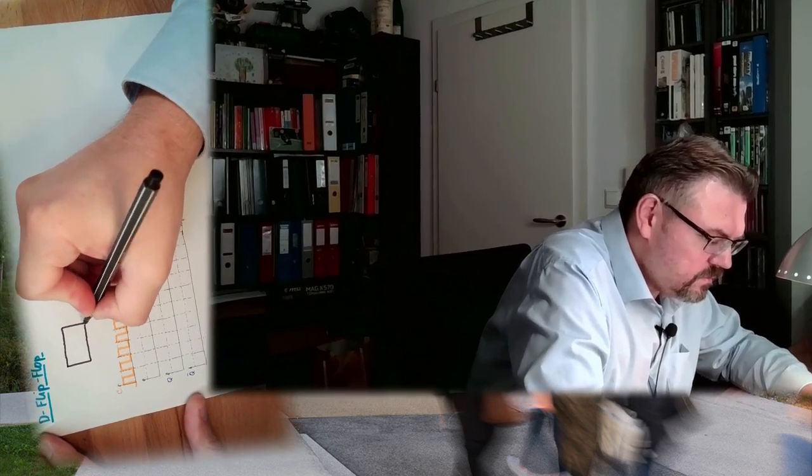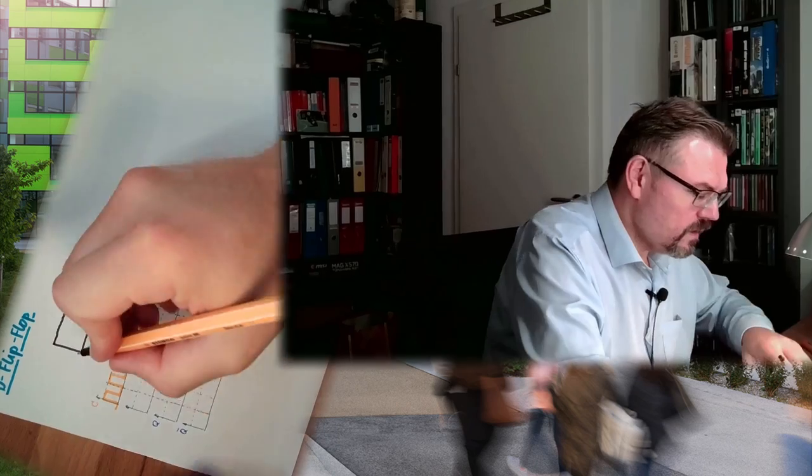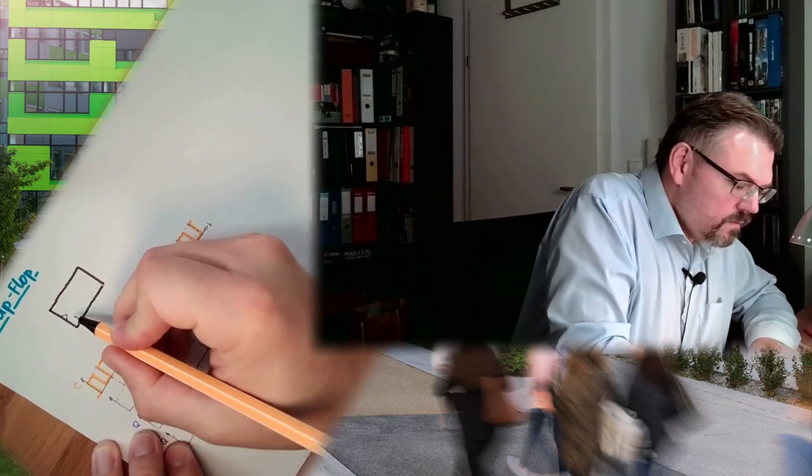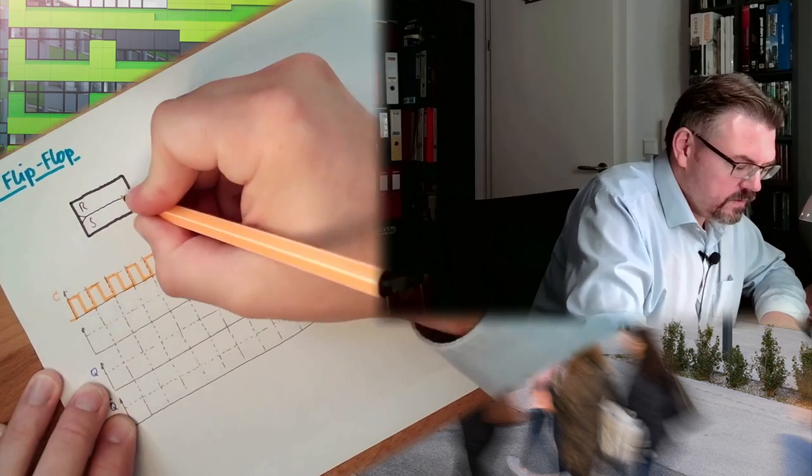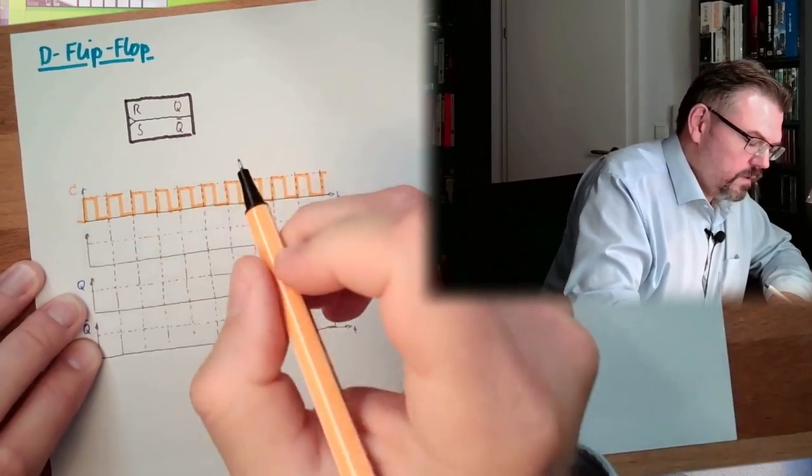Base is again the RS flip-flop. So we have somewhere this RS element inside. R, S, Q, not Q. All right.